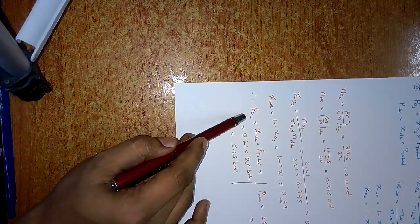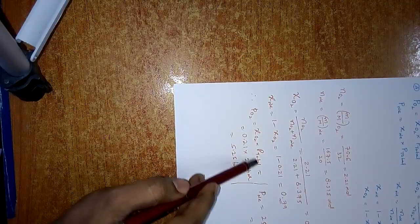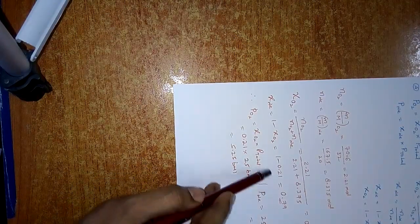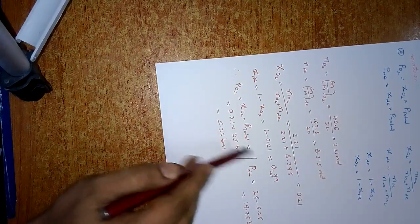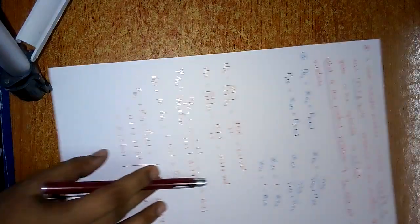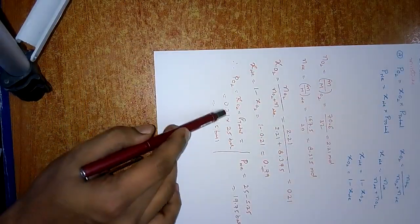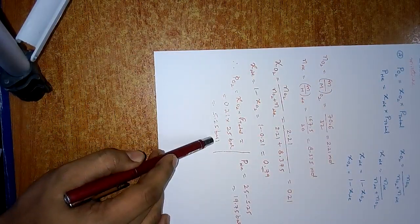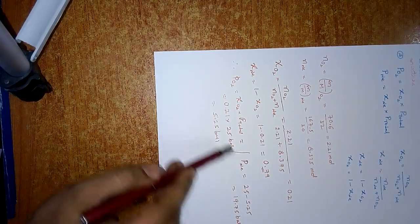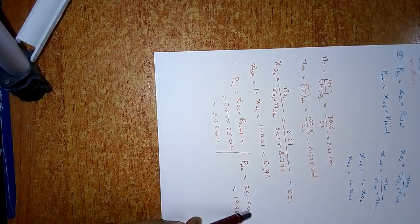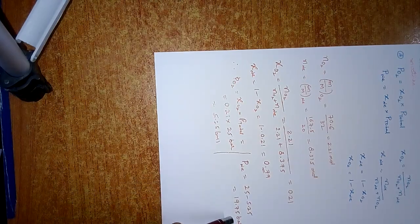Partial pressure of oxygen = mole fraction of oxygen × total pressure. The mole fraction of oxygen we got is 0.21, and total pressure is 25 bars. So partial pressure of oxygen = 0.21 × 25 = 5.25 bars. Total pressure is 25, oxygen accounts for 5.25, so remaining pressure for neon is 19.75 bars.